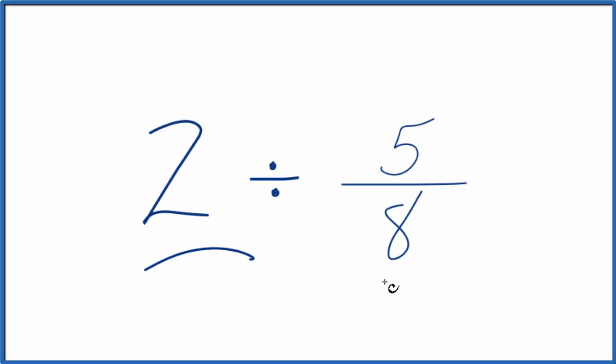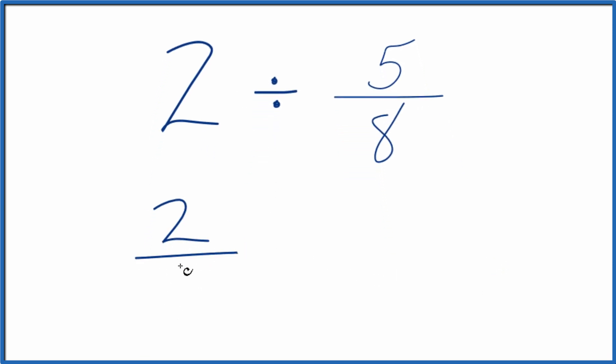Here's how you can divide 2 by 5 eighths. So the first thing we want to do, let's consider 2 just to be 2 over 1. Still 2, we're dividing by 1, but now we have a fraction.